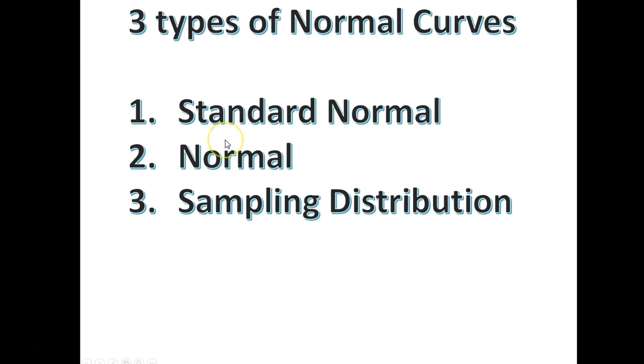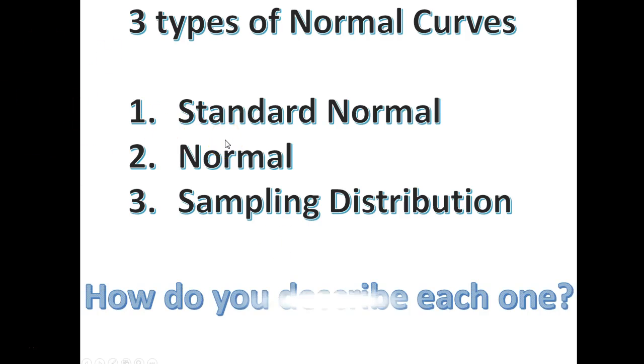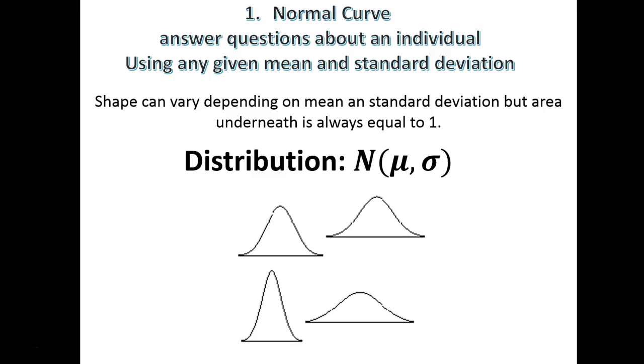They all look the same. We've got standard normal, normal, and sampling distribution. So how to describe each one? You've got your normal curve, which can look a little bit different depending on that standard deviation.